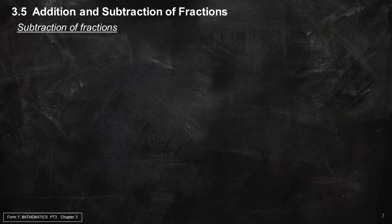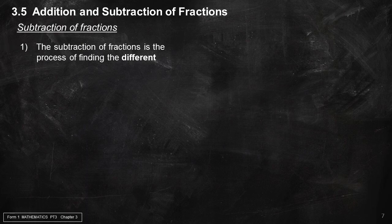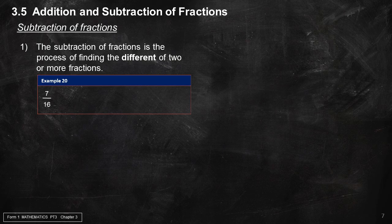Subtraction of fractions is the process of finding the difference of 2 or more fractions. Example 20: 7 over 16 minus 3 over 16 equals (7 minus 3) over 16, which equals 4 over 16. This can be downscaled further to 1 over 4.